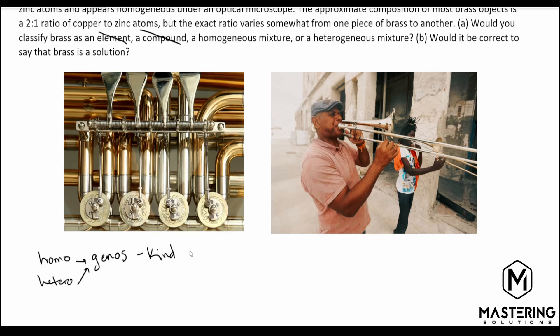You can't really tell a difference, so this is a homogeneous mixture — meaning we have different things in there, but it's essentially all mixed to the same uniformity so that there's not much difference if we look under a microscope. If it were heterogeneous, we would be able to tell a difference and see there are different kinds of things in the mixture.